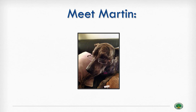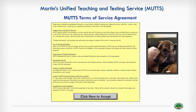Meet Martin. Martin is my almost 15-year-old shepherd and while he is frequently a very good boy, he occasionally wants to take over the world and has some pretty extreme ideas about what is acceptable behavior. Martin has decided that he wants to enter into the EdTech space and has rolled out this wonderful new suite called Martin's Unified Teaching and Testing Service, or MUTTS for short.